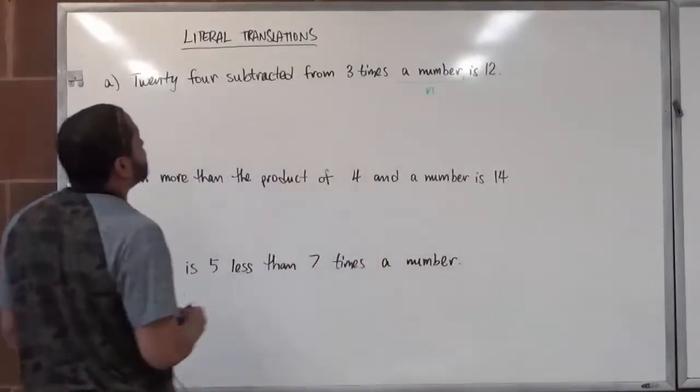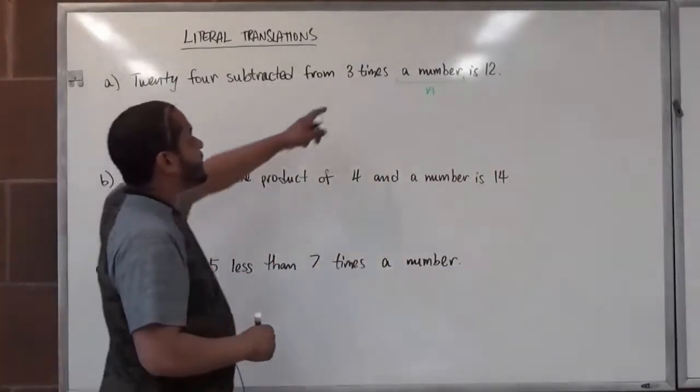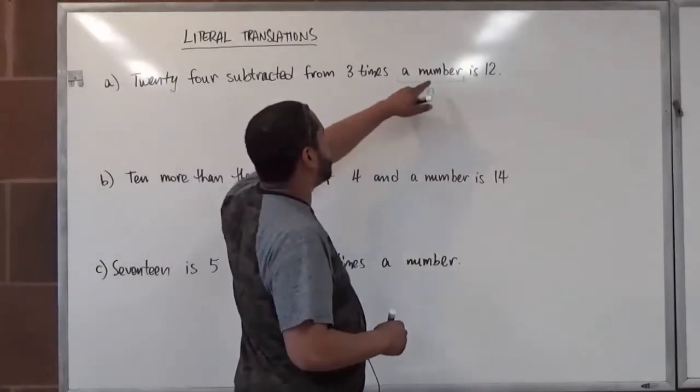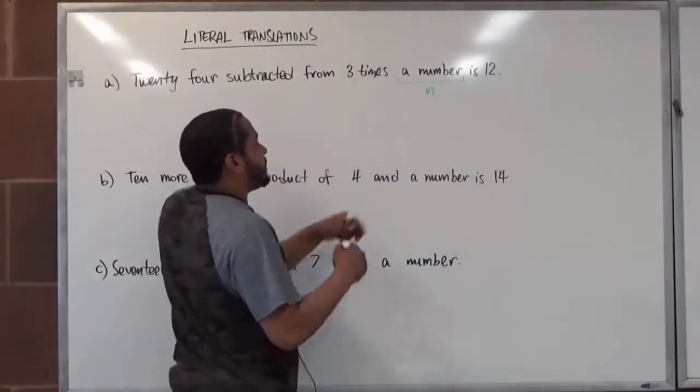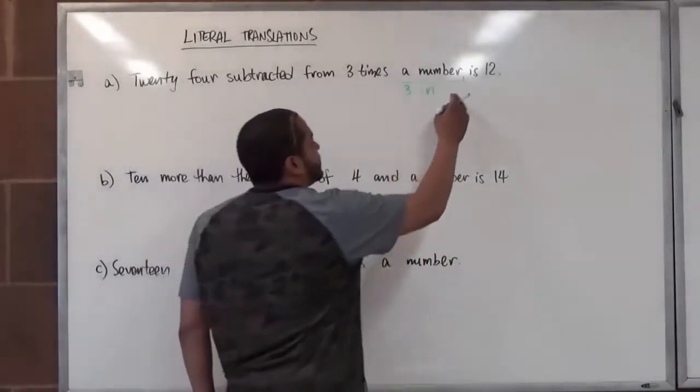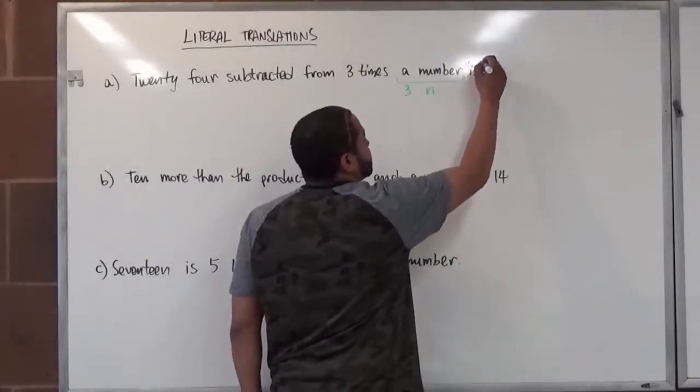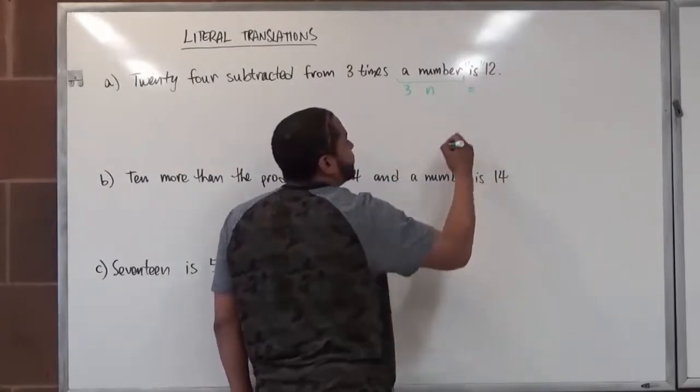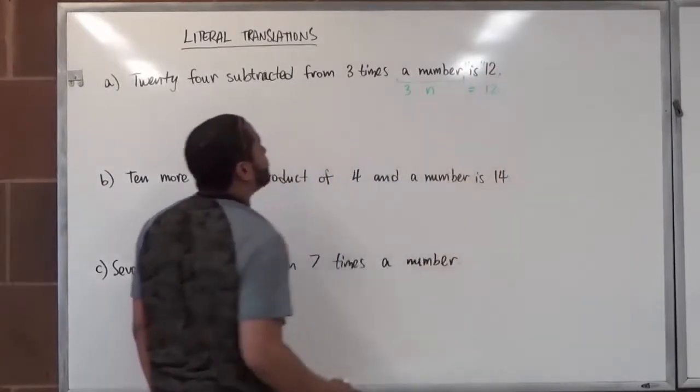For the numbers already, we see that this is going to be 3 times n because a number is n. So we have 3 times that number n, so here we have 3n. Also the word 'is' is equals. This literally translates into the equal term. So here this is going to be equivalent to 12.